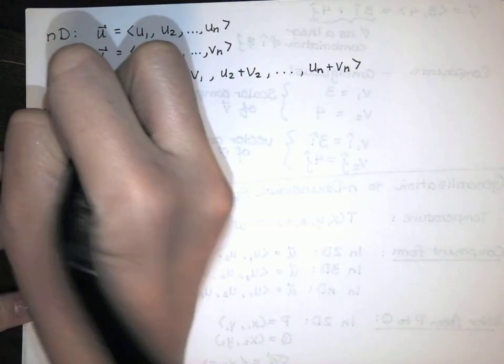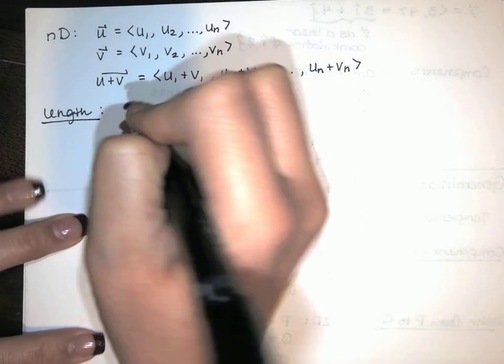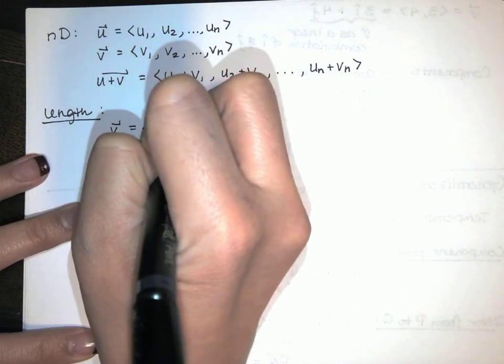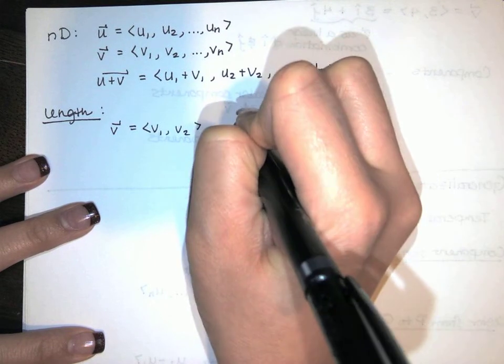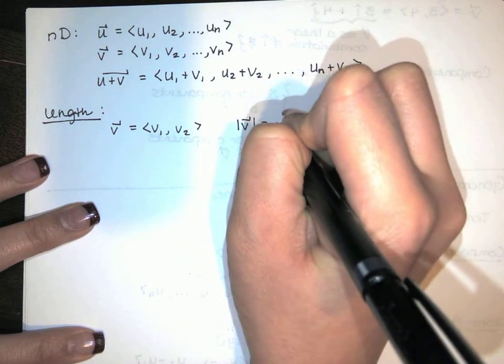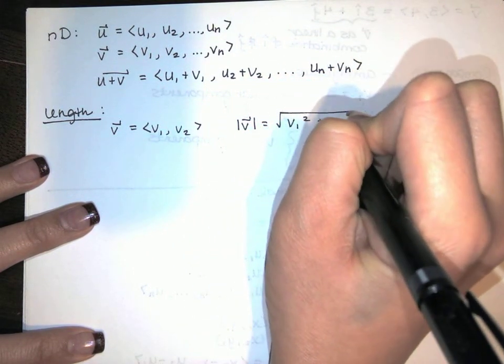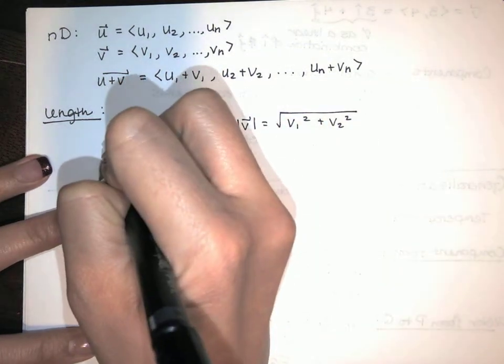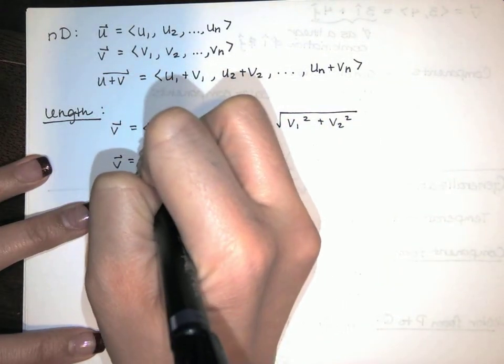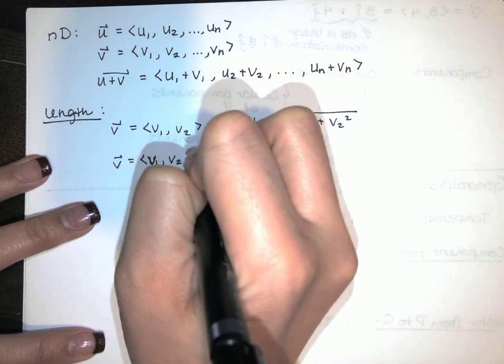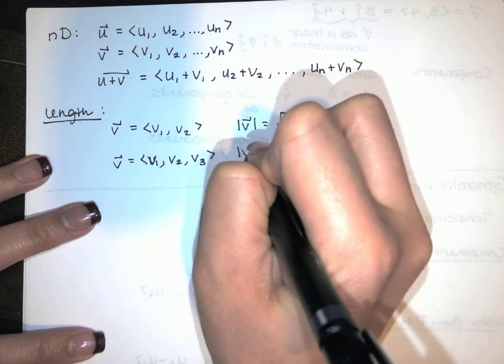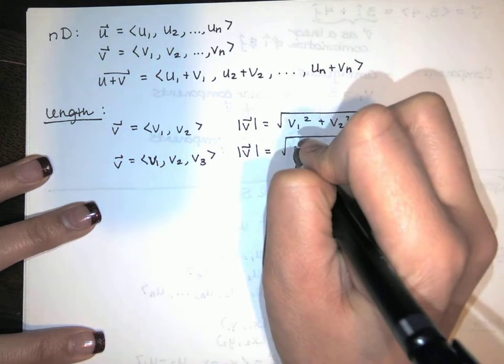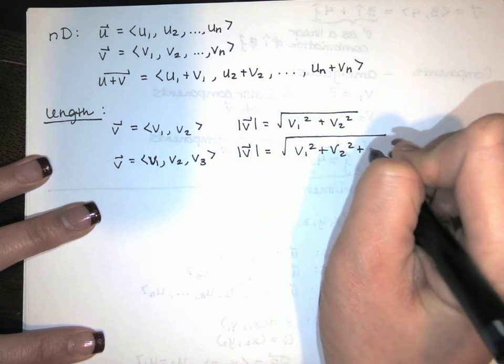Length or magnitude. This is fun. If v has two components, v1 and v2, the length of v just comes from taking those components, squaring them, and adding them, and taking the square root. Now, we can prove that with the Pythagorean theorem, we could use it twice. But if I've got a vector in 3D, I just take the three components, I square them, and add them, and take the square root.